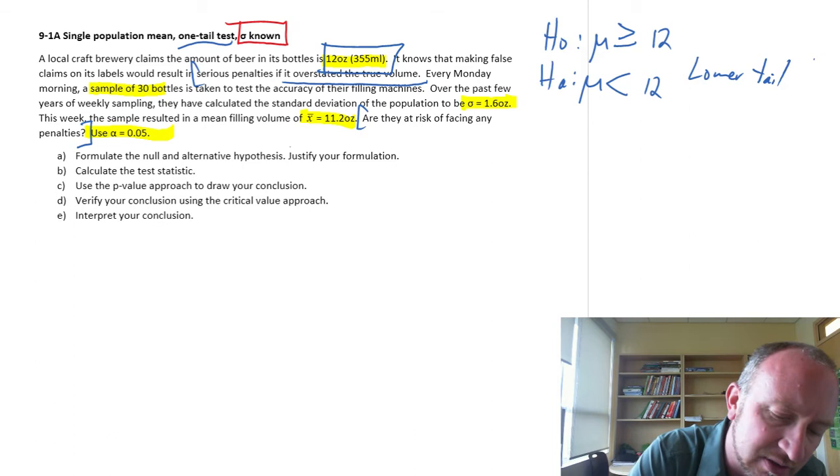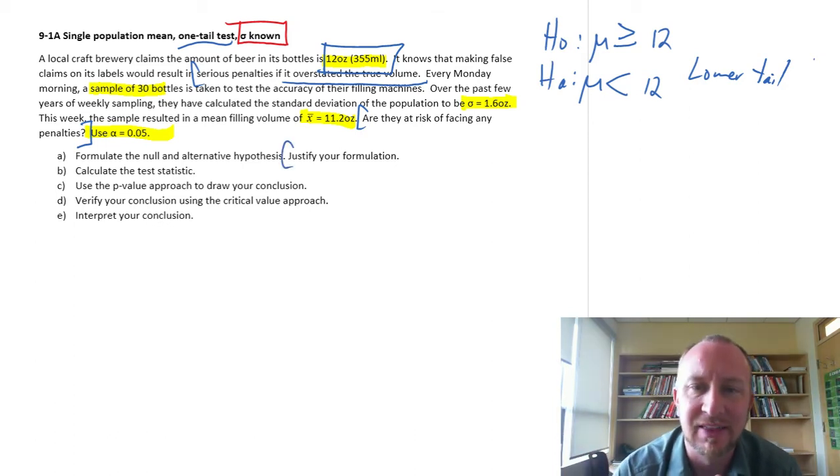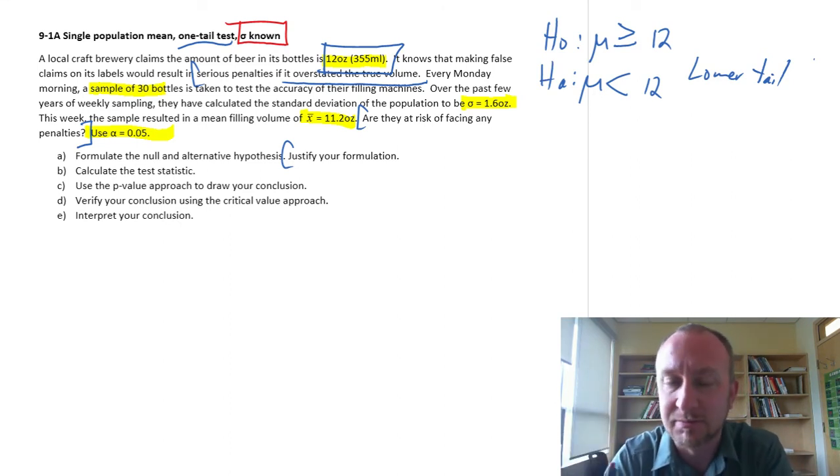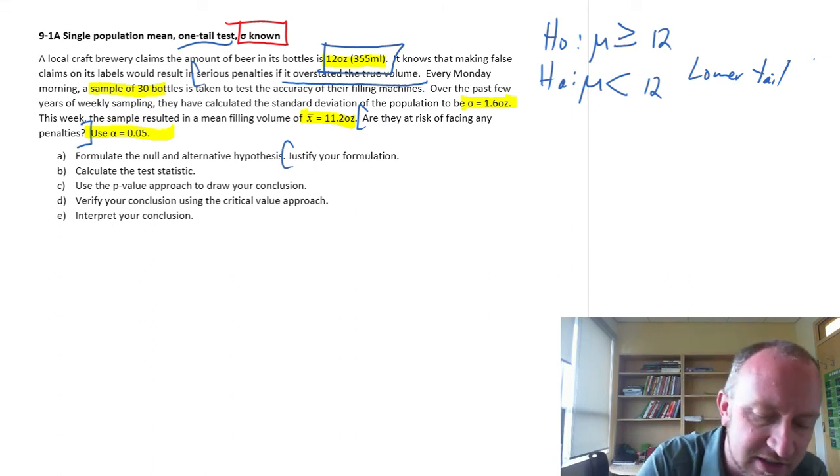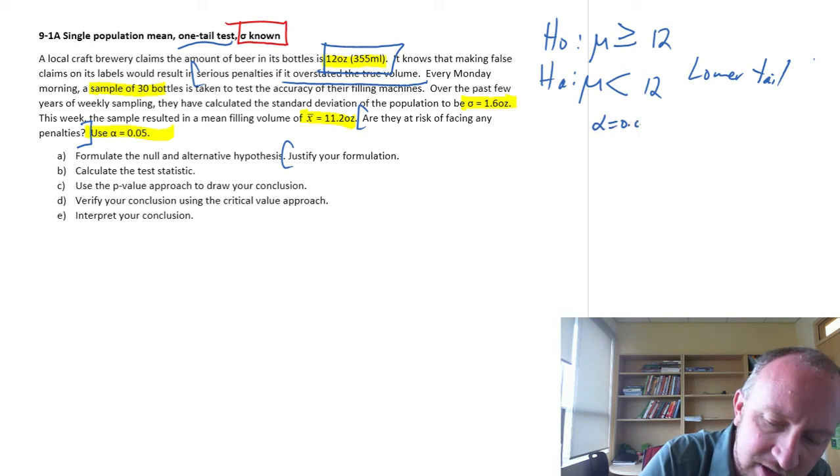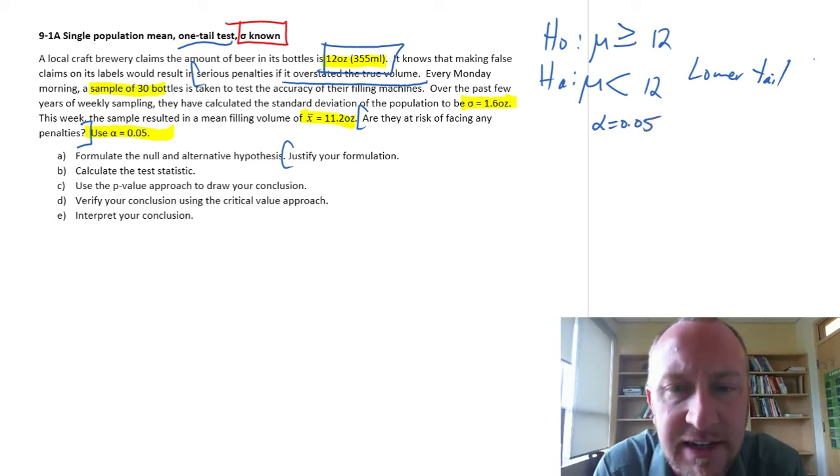That lower tail defines what we call a rejection region, where my test statistic must lie in order for me to reject the null hypothesis. To justify this: if I fail to reject the null hypothesis here, that means my evidence supports the claim that the average filling weight is at least 12 ounces, so we are not overstating. If my evidence supports the alternative hypothesis, then that implies we are overstating the true volume.